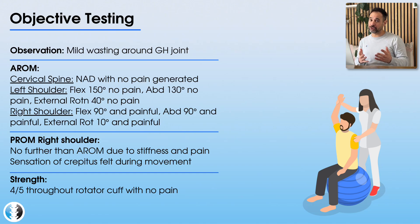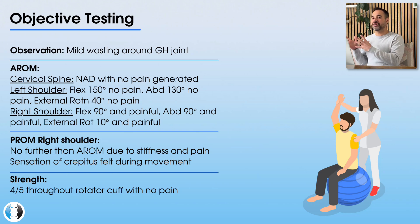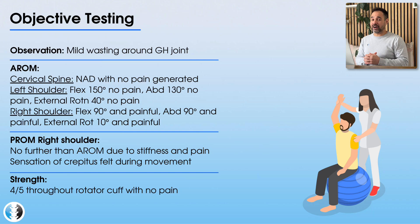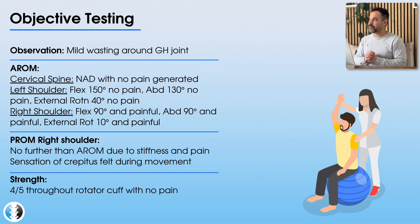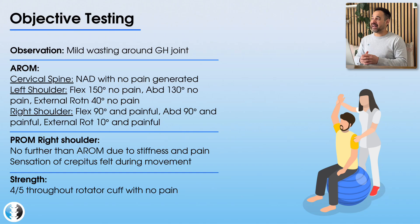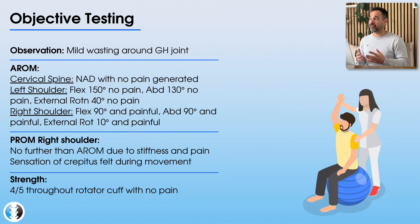We're going to look at a couple of different joints, including the cervical spine, the right shoulder, and also the asymptomatic left shoulder. The cervical spine has full range of movement with no pain and no abnormalities. The left shoulder has reasonable range of movement for a 68-year-old: 150 degrees of flexion, 130 degrees of abduction, and around 40 degrees of external rotation, all with no pain.